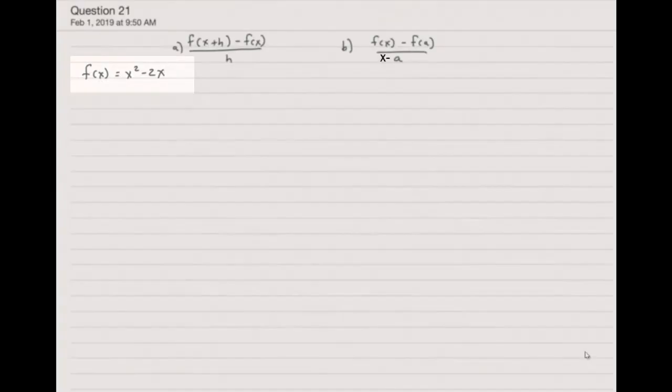Now what I have to do is anywhere I see the x, I need to replace it in parentheses with x plus h. So my first term will be (x + h)² and then minus 2 times (x + h). You need to remember to use parentheses.